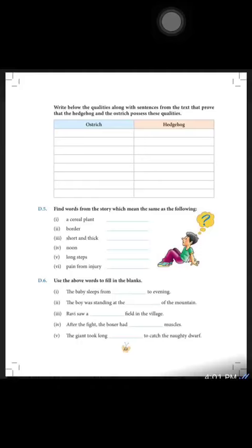D5: find words from the story which mean the same as the following. Children, you have already done the word meanings. So let's start. First is a cereal plant — it's barley. Second is water — itch. Short and thick — stumpy.